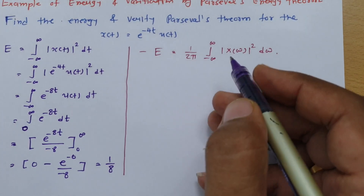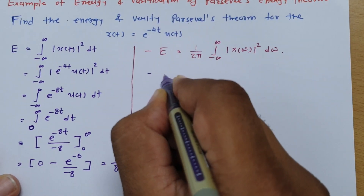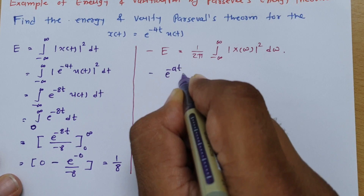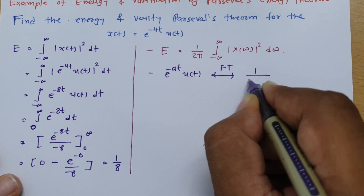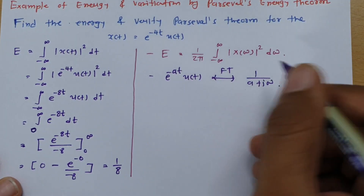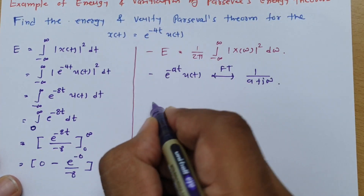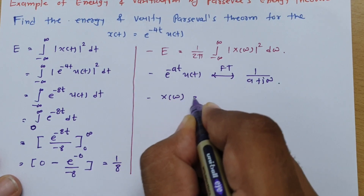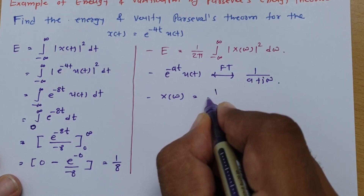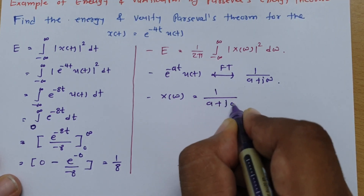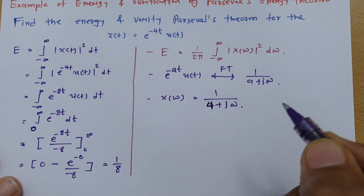We know the Fourier transform of the basic formula: the Fourier transform of e^(-at) u(t) is 1 / (a + jω). So, for our signal where a = 4, we get X(ω) = 1 / (4 + jω).